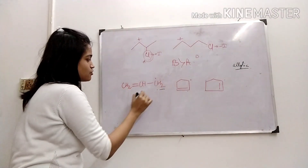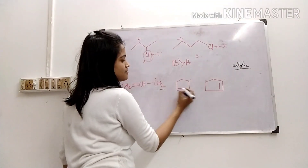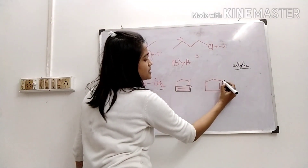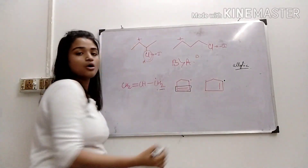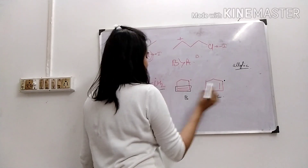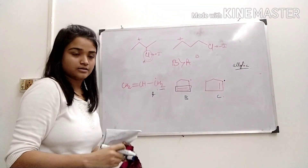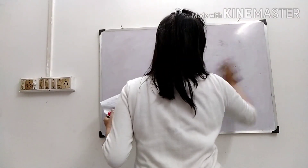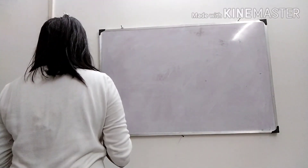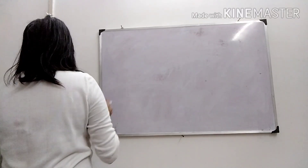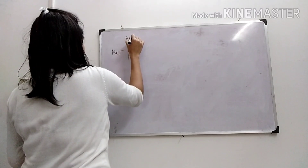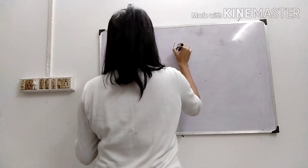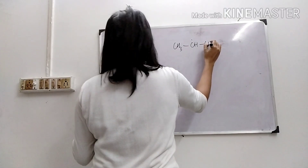This is the allylic compound — you can see it is lying beside this olefin group. This one is again lying beside this olefin group. But compound C has its radical present on the carbon atom which itself has the double bond. So compound C is not the allylic radical; it is not the allylic compound.